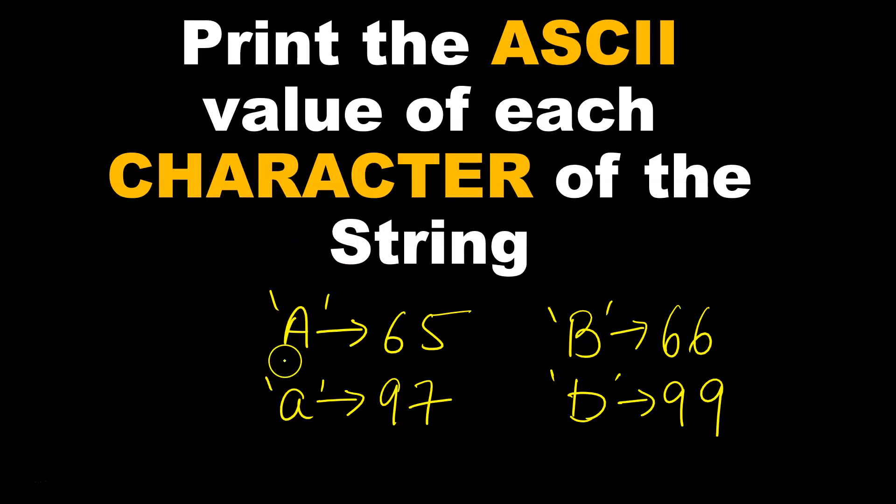For example, capital A has the ASCII value 65, capital B has the ASCII value 66. In a similar way, you must know the ASCII value of small 'a', that is 97, and the ASCII value of small 'b', that is 99. You must know these values.